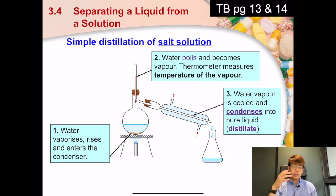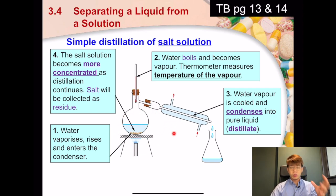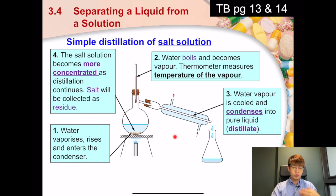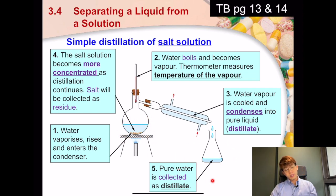The water vapor then enters the condenser where it meets a cooler environment, which causes it to condense into the distillate. As distillation occurs, the distillation flask becomes more and more concentrated because the sodium chloride remains the same while the water decreases. Like soup — the more you boil it, the saltier it gets. The pure water is collected as the distillate; we are interested in collecting the liquid distillate, not the solid.